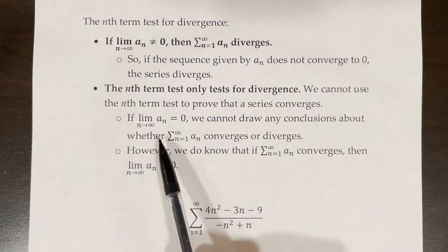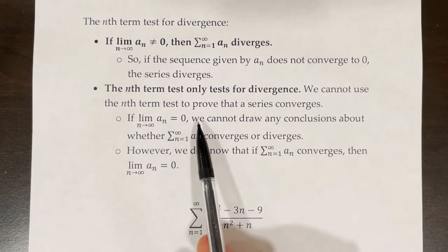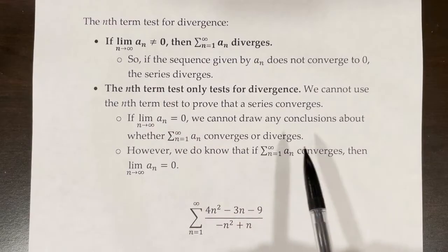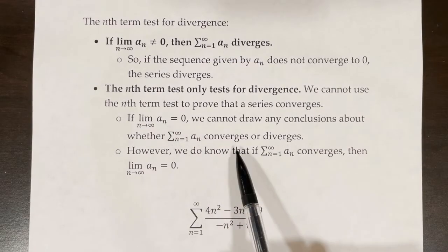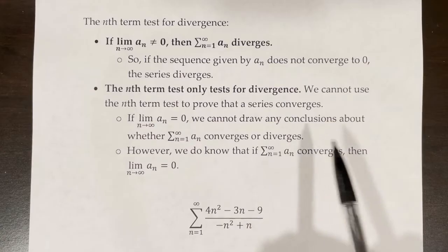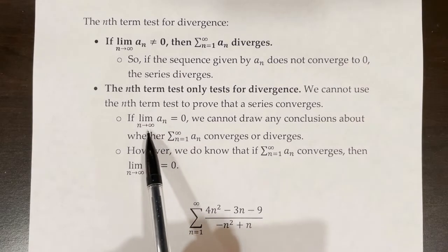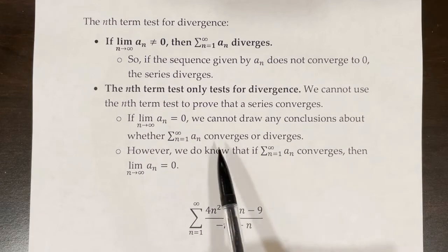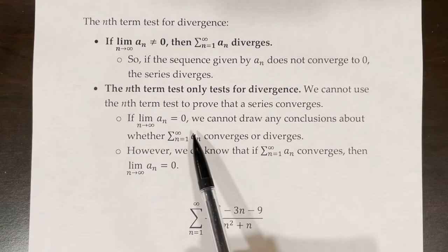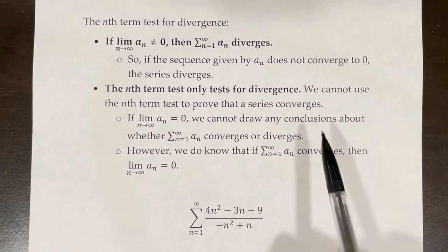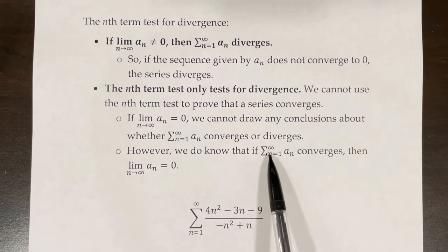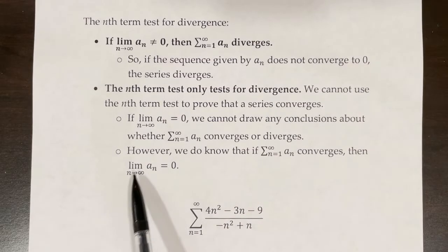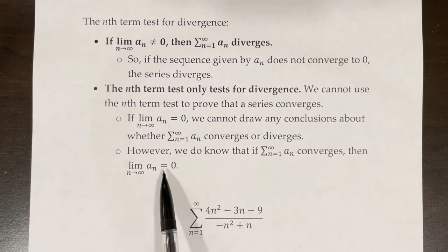If the limit as n approaches infinity of a sub n is equal to 0, we can't draw any conclusions about whether that series will converge or diverge. A common mistake is to think that just because the limit equals 0, the series converges — but that just means the nth term test is inconclusive. However, we do know that if the series converges, then the limit as n approaches infinity of a sub n must equal 0.